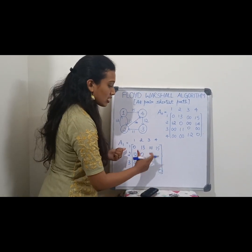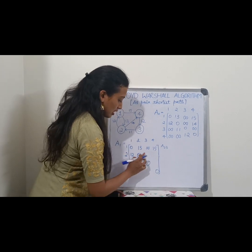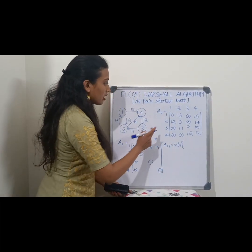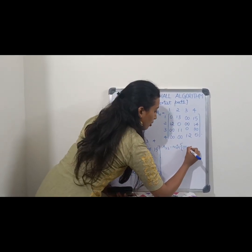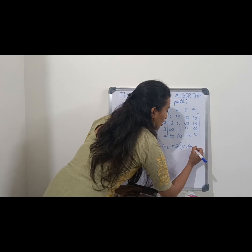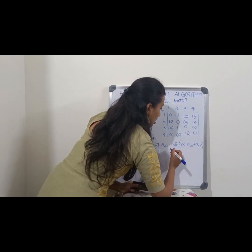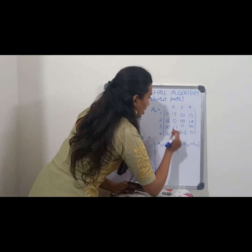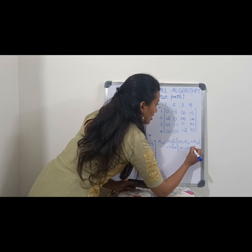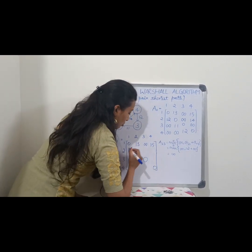Now we need to find the distance between the remaining vertices through vertex 1. To find the distance from 2 to 3, we take the minimum of: the direct distance from 2 to 3 which is infinity, and A[2][1] plus A[1][3], which is 12 plus infinity. The minimum is infinity, so the distance from 2 to 3 is infinity.